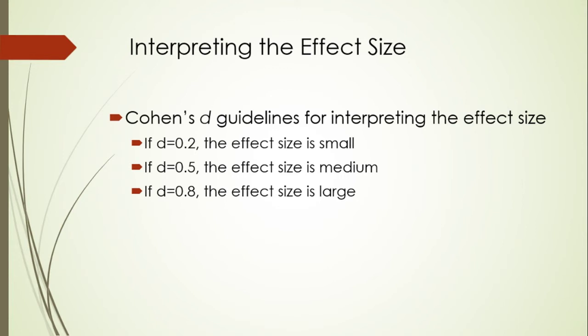Cohen's d guidelines for interpreting the effect size are: if d ranges from 0 to 0.2, the effect size is small; if the effect size is more than 0.2 and less than 0.5, the effect size is medium; and if d is equal to 0.8, the effect size is large.